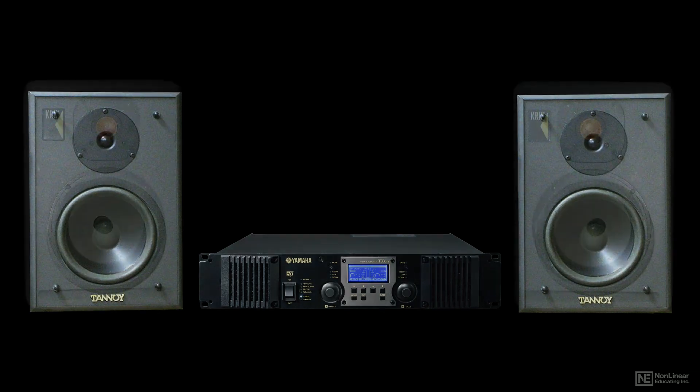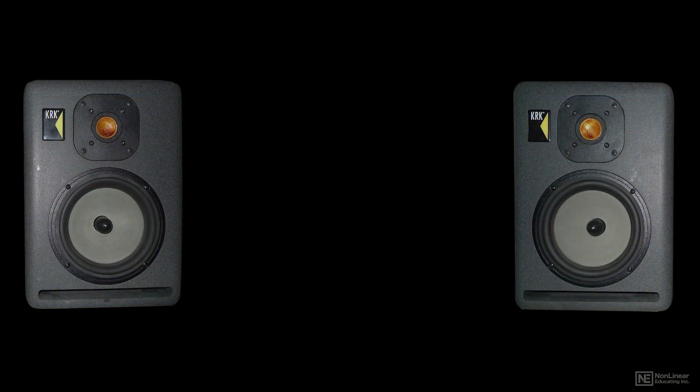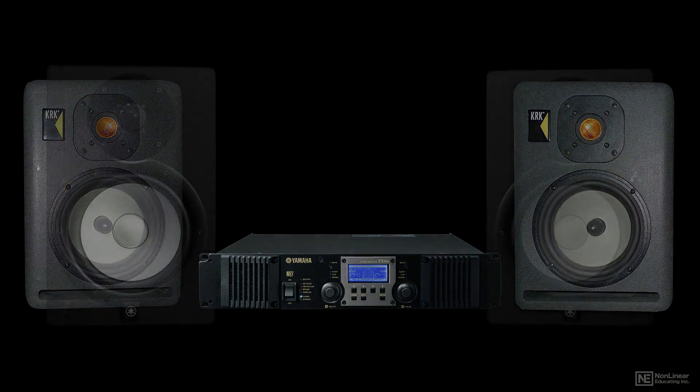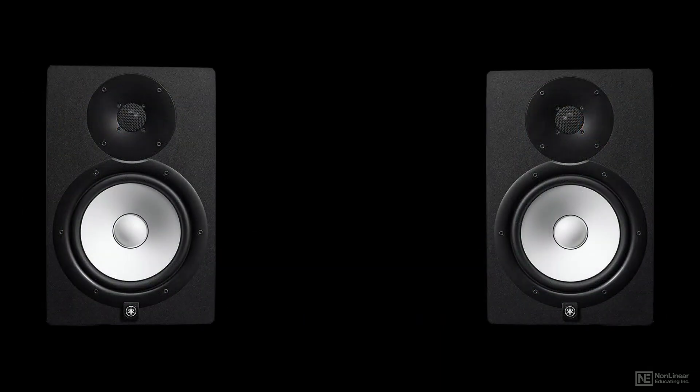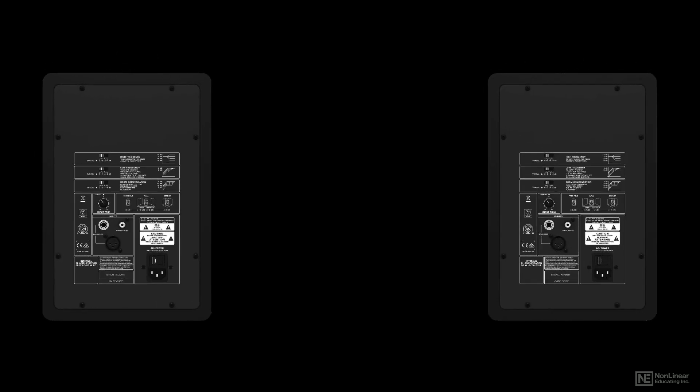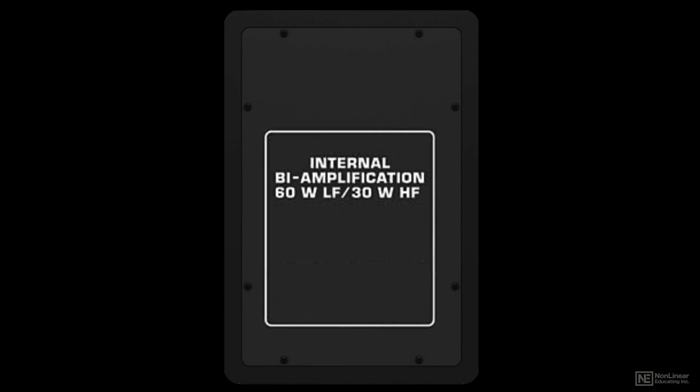Traditionally, studio monitors were passive and required a separate power amp to drive them, but nowadays most studio monitors are active, which means that they have the power amp, or amps, built in. A typical two-way studio monitor, woofer and tweeter, is bi-amped, with separate power amps for the two drivers — a lower wattage amp for the tweeter and a higher wattage amp for the woofer, as required.